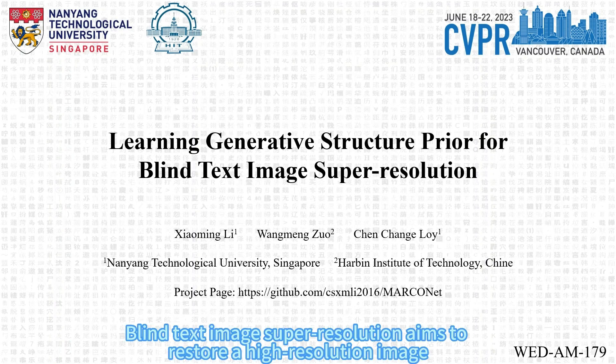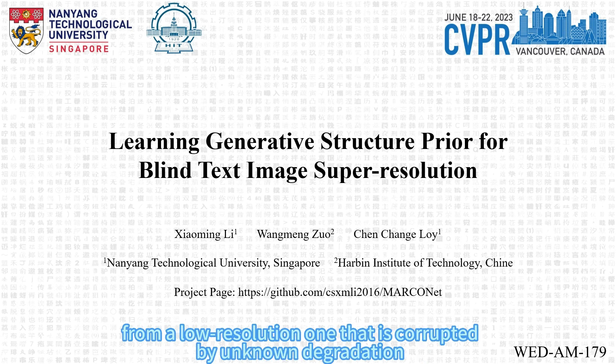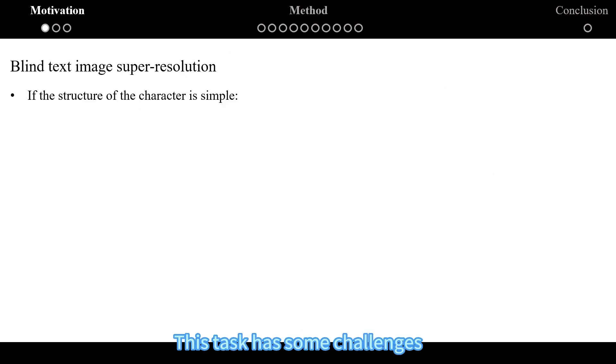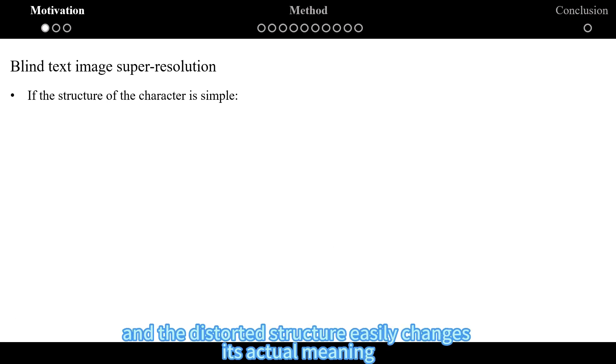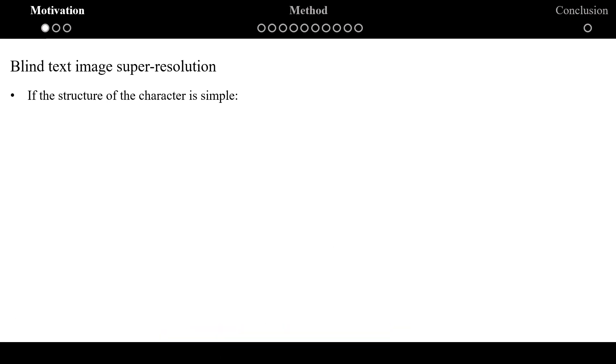Blind text image super-resolution aims to restore a high-resolution image from a low-resolution one that is corrupted by unknown degradation. This task has some challenges. On the one hand, each character has a specific structure, and the distorted structure easily changes its actual meaning.